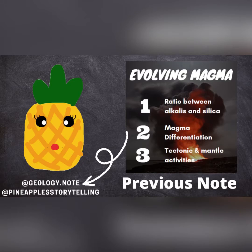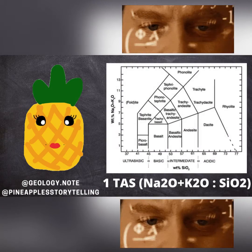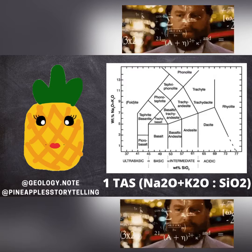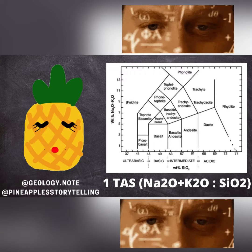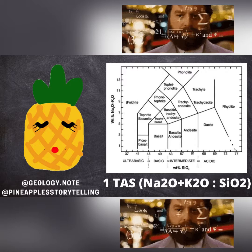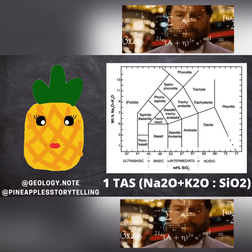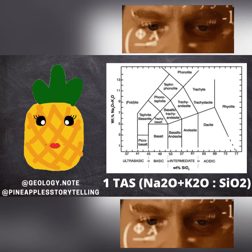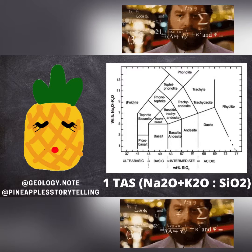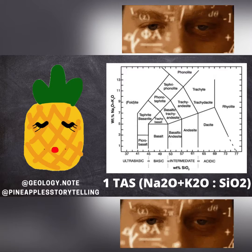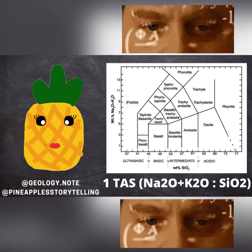First, it is the ratio between alkalines and silica. This diagram is called the Total Alkaline Silica diagram. It is used to name volcanic rock by its alkaline and silica content. But why them? It is because the ratio between them determines the actual and normative